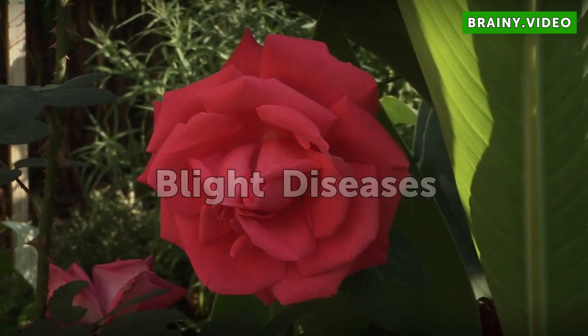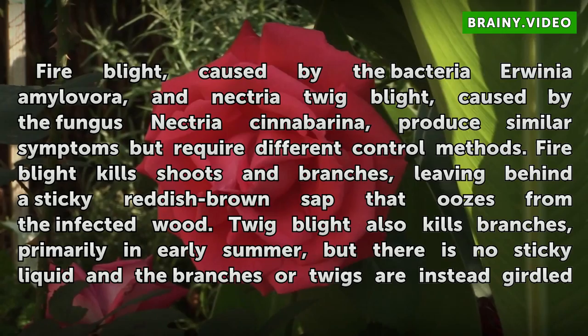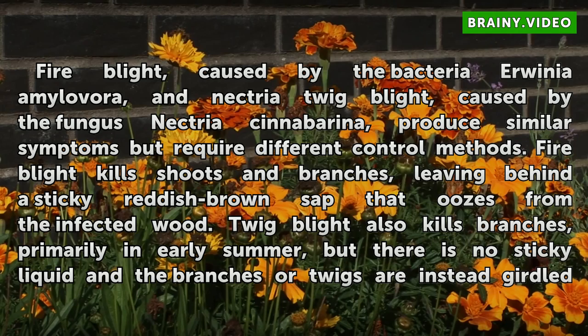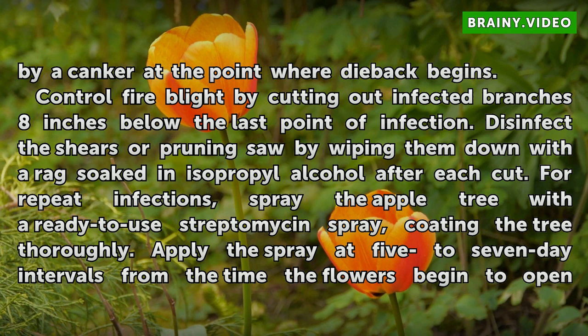Blight Diseases. Fire blight, caused by the bacteria Erwinia amylovora, and Nectria twig blight, caused by the fungus Nectria cinnabarina, produce similar symptoms but require different control methods. Fire blight kills shoots and branches, leaving behind a sticky reddish-brown sap that oozes from the infected wood. Twig blight also kills branches, primarily in early summer, but there is no sticky liquid — branches or twigs are instead girdled by a canker at the point where die-back begins.